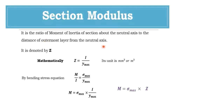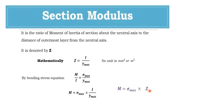We know the bending stress equation is written as M/I = σ_max / Y_max. Therefore, moment M = σ_max × (I / Y), and I/Y is nothing but the section modulus Z. So if the moment is constant, when Z increases the induced stress in the section gets reduced, and vice versa — if Z decreases, the stress increases.